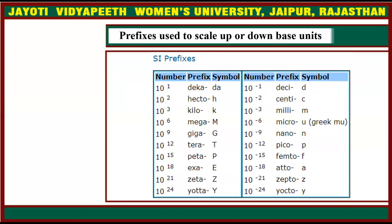This table shows the prefixes used to scale up or down base units, with their number, prefix, and symbol. 10 to the power 1 is deka, 10 to the power 2 is hecto, 10 to the power 3 is kilo, 10 to the power 6 is mega, 10 to the power 9 is giga, 10 to the power 12 is tera, 10 to the power 15 is peta, 10 to the power 18 is exa, 10 to the power 21 is zeta, and 10 to the power 24 is yota.